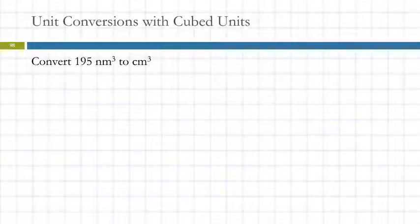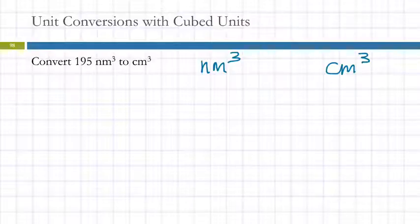Let's look at an example of unit conversions with cubed units. This is one that just gets under some people's skin. They have a hard time with this. So convert 195 cubic nanometers to cubic centimeters.